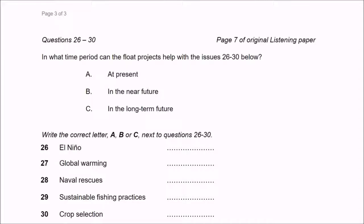Then we have questions from 26 to 30, and we are going to play it for you. And just before I play, just read it: in what time period can the float projects help with the issues 26 to 30—present, in the near future, in the long-term future. That will be El Nino, global warming, naval rescues, sustainable fishing practices, crop selection. So you have to write this correct letter here after listening to the tape script.